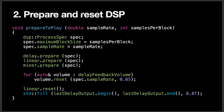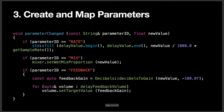Once again, we're back to `prepareToPlay`. When your audio is getting ready to start playing, `prepareToPlay` calls and ensures all of your DSP algorithms are cleared out and ready to go. We have that DSP `ProcessSpec` object again, because we need all of our DSP algorithms to know what sample rate we're operating at. For parameters, we have three in this case: a rate parameter that defines what the delay rate is going to be, the mix which blends between our dry and wet signal, and the feedback which defines how long the feedback of our delay is going to be.